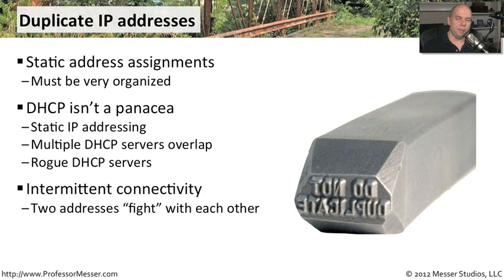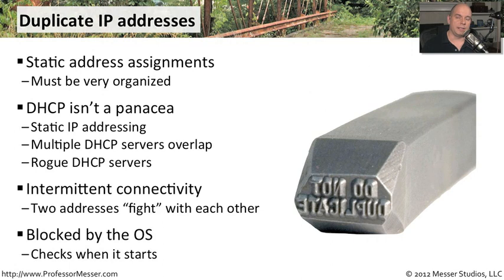Now you have two MAC addresses that supposedly have the same IP address, and you can't have all of that information go to both devices. You have a switch or other devices on your network that now have to choose which device they're going to send that information to. A number of newer operating systems will do a check first to make sure that the IP address they're using is not already in use somewhere else on the network, and if it is, it pops up a message on your screen saying it has detected this IP address on the network and will not communicate until you change the IP address of that workstation.